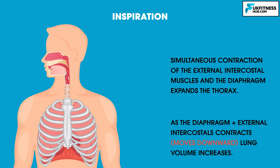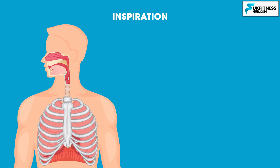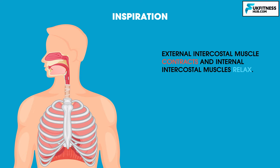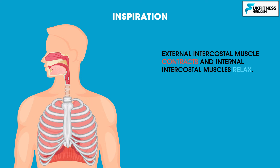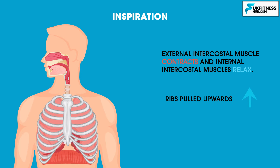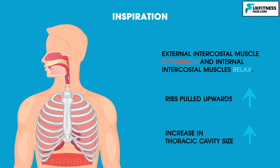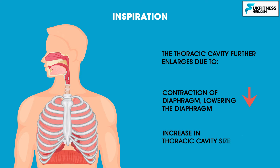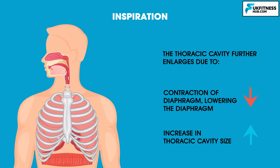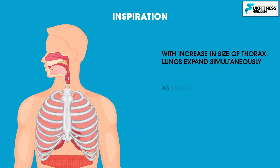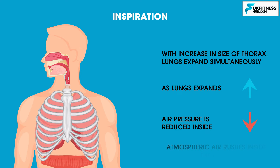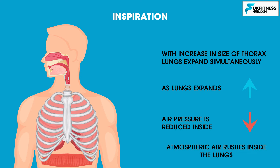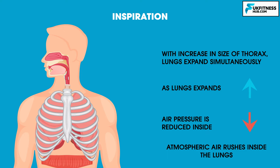As the diaphragm and intercostal muscles contract, lung volume increases. Inspiration involves the following events: external intercostal muscles contract and internal intercostal muscles relax. Due to the contraction of the external intercostal muscles, the ribs are pulled upward, resulting in an increase in thoracic cavity size. The thoracic cavity further enlarges due to the contraction of the diaphragm, which lowers the diaphragm and increases the total size of the thoracic cavity. With the increase in size of the thorax, the lungs expand simultaneously, air pressure inside is reduced, and atmospheric air rushes inside the lungs.